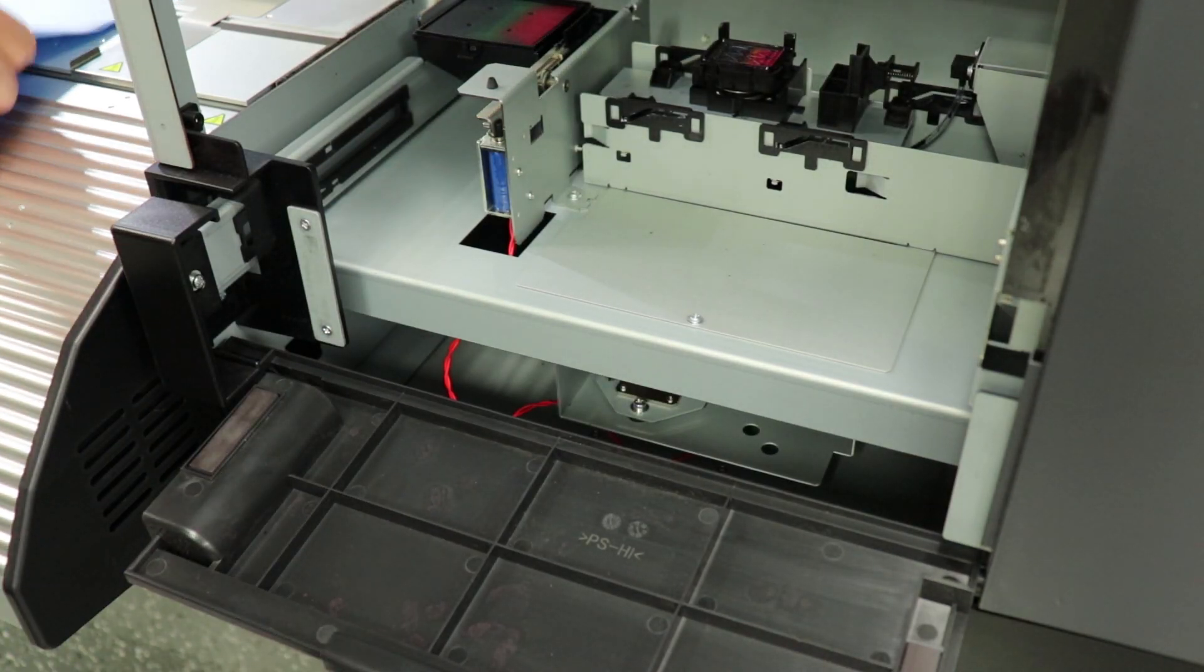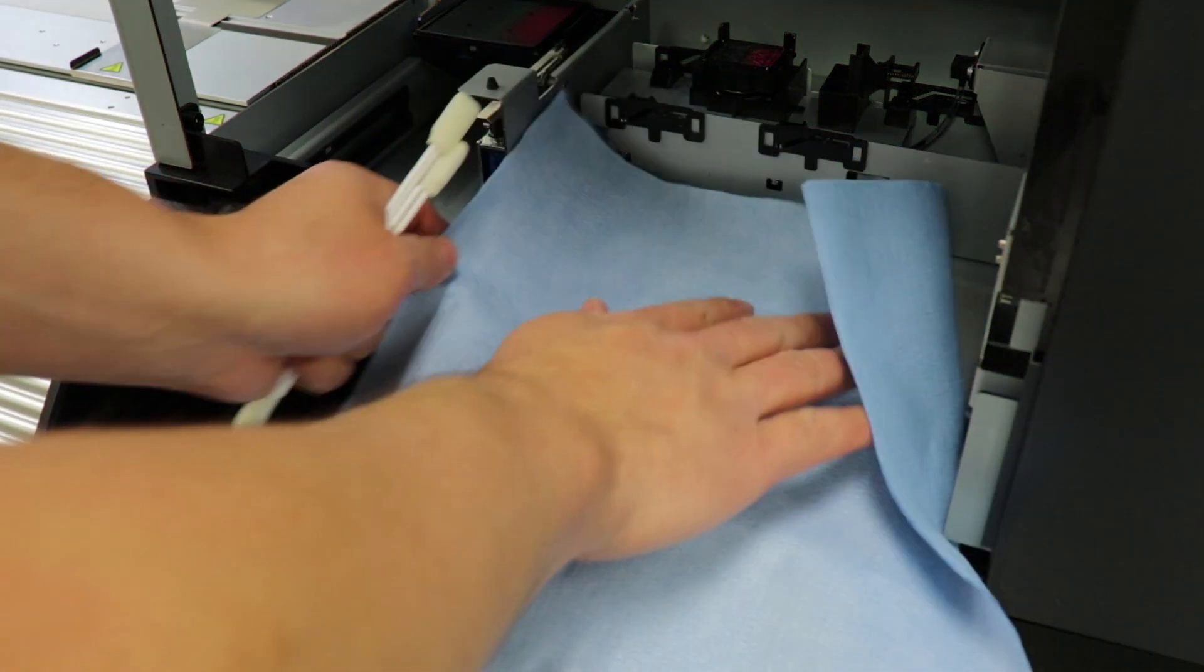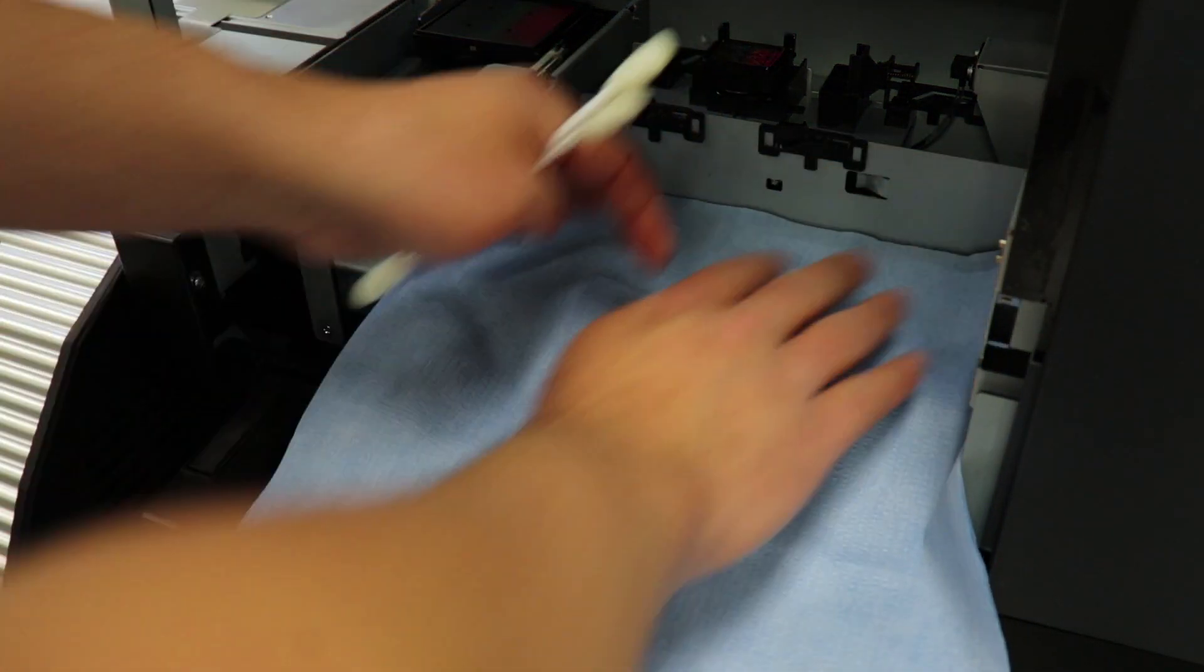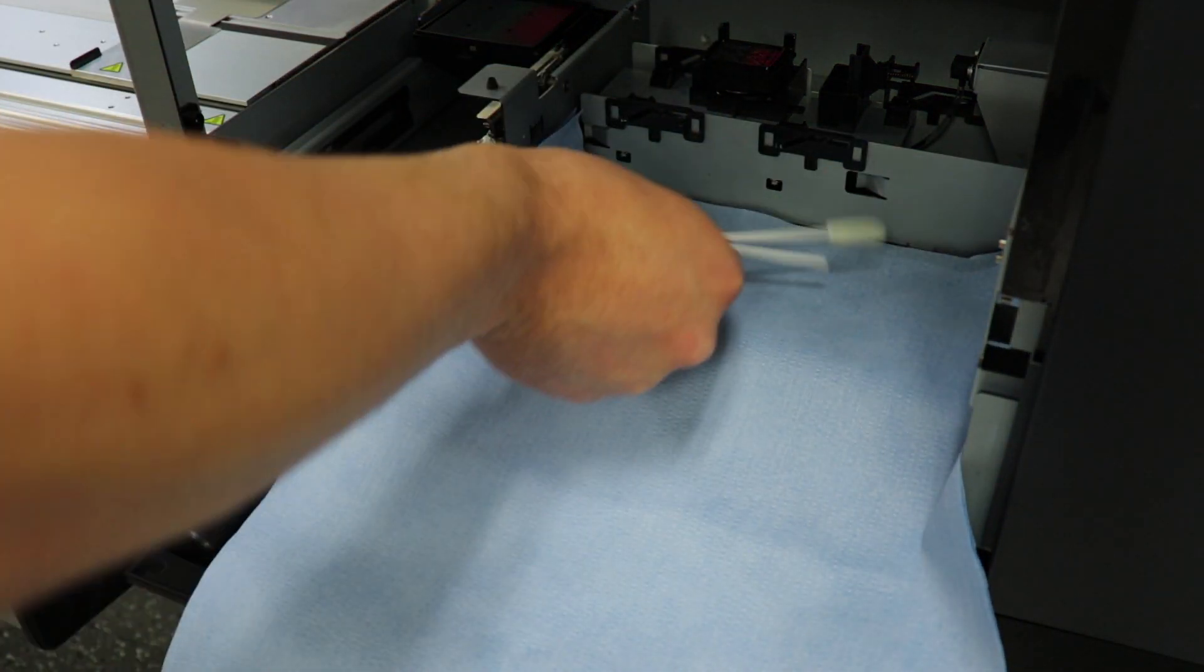The first thing I like to do is lay down a paper towel in front of the maintenance station. This is going to keep everything nice and clean and limit any ink drips we might have.